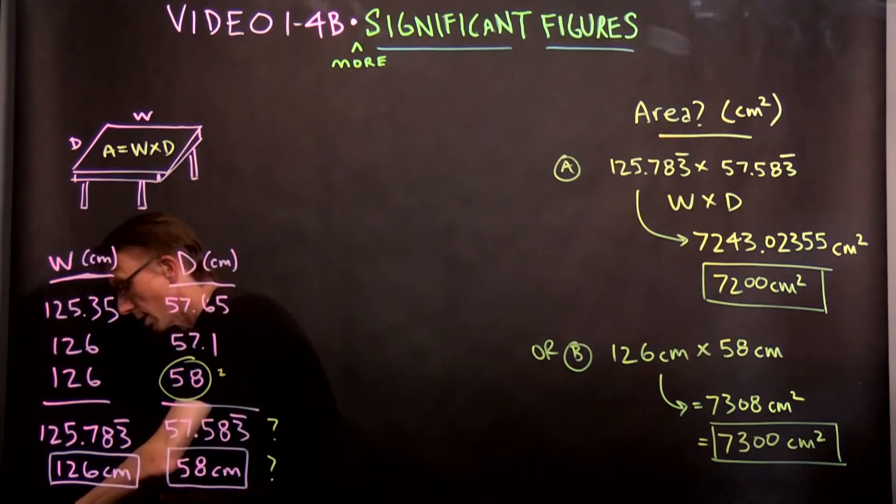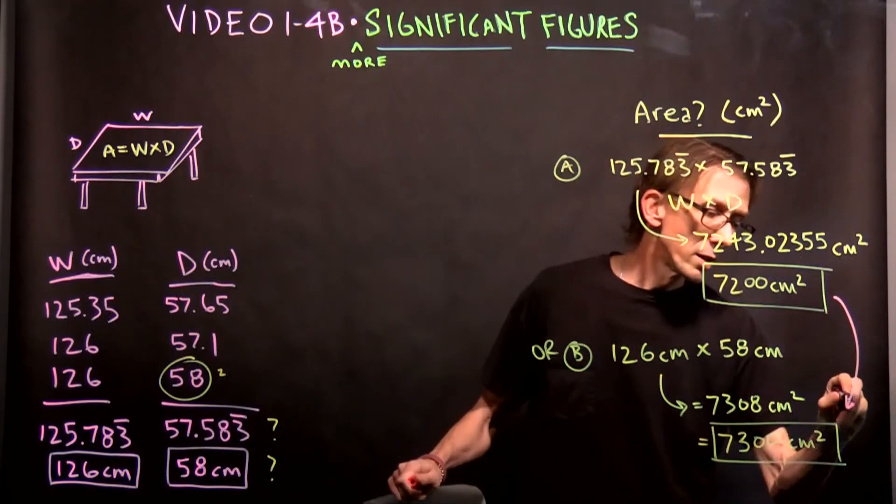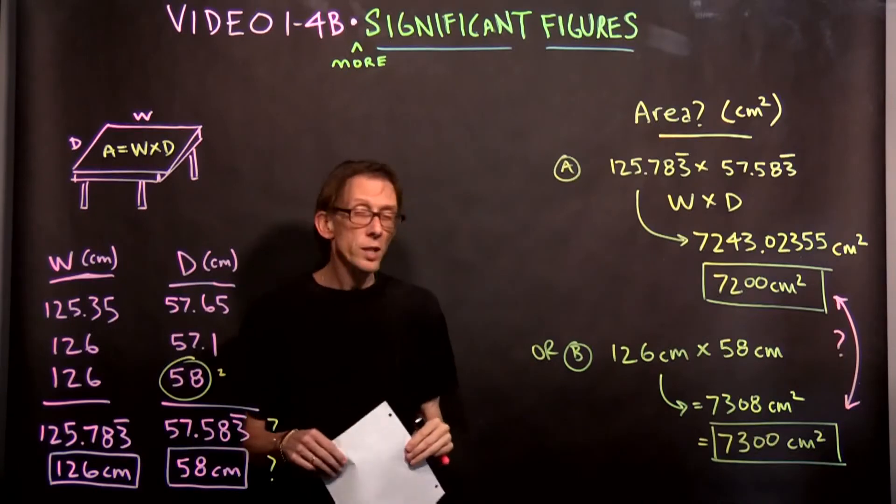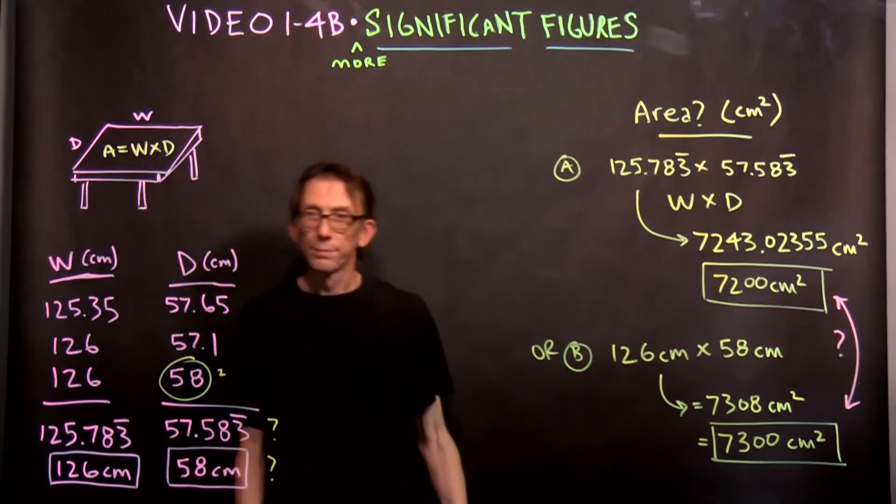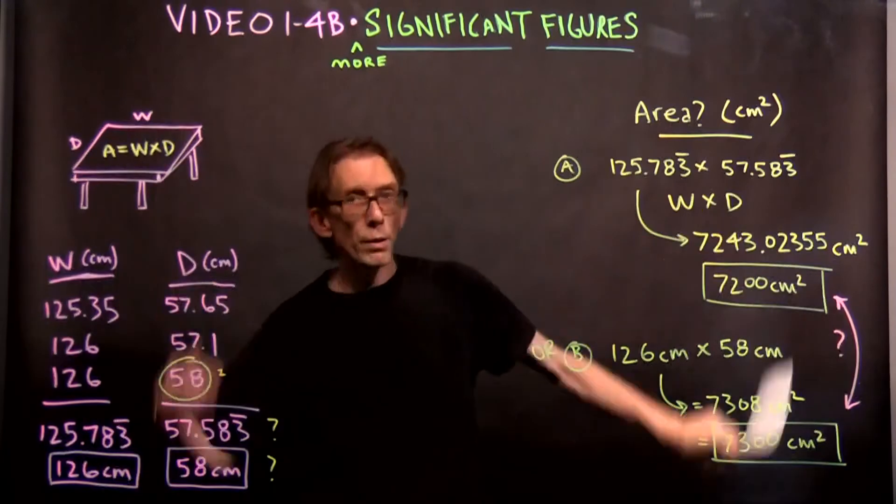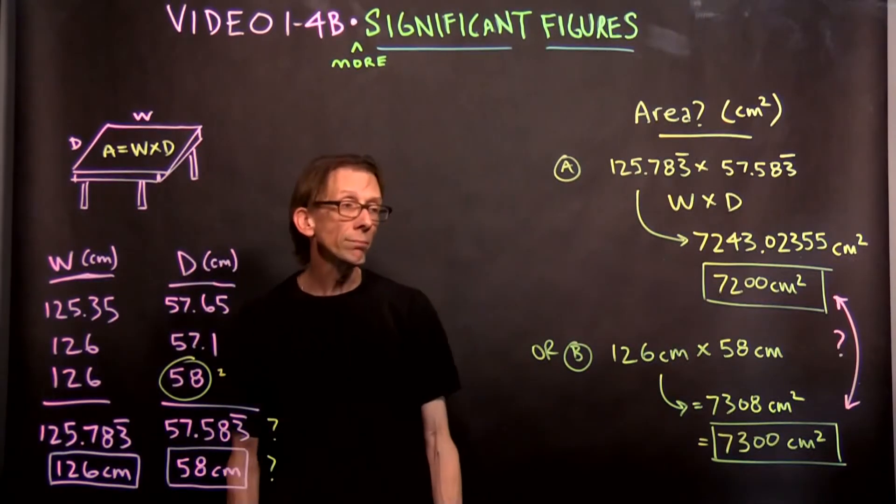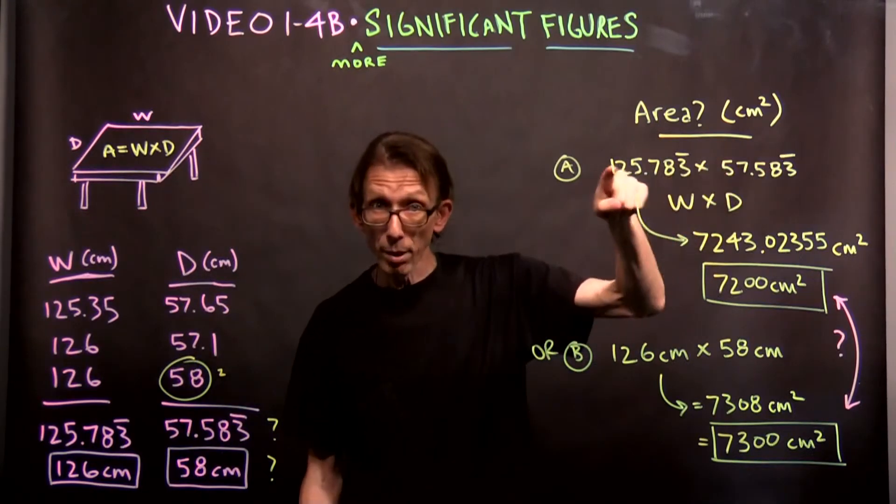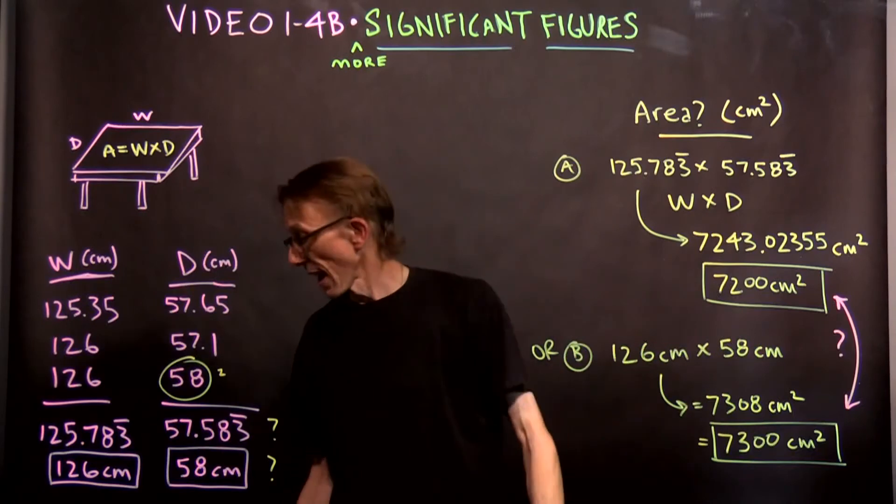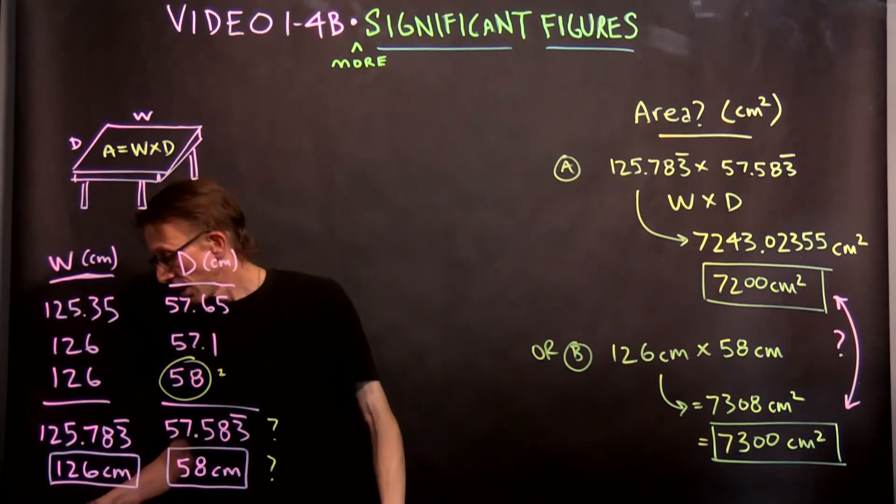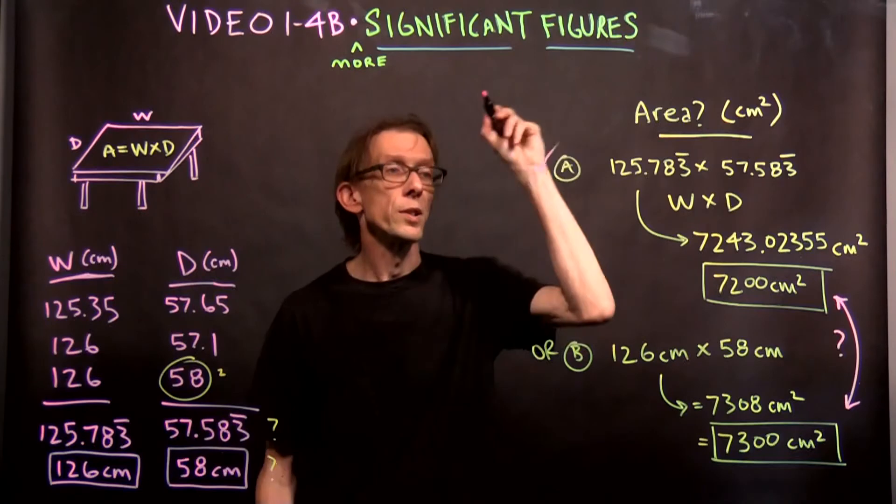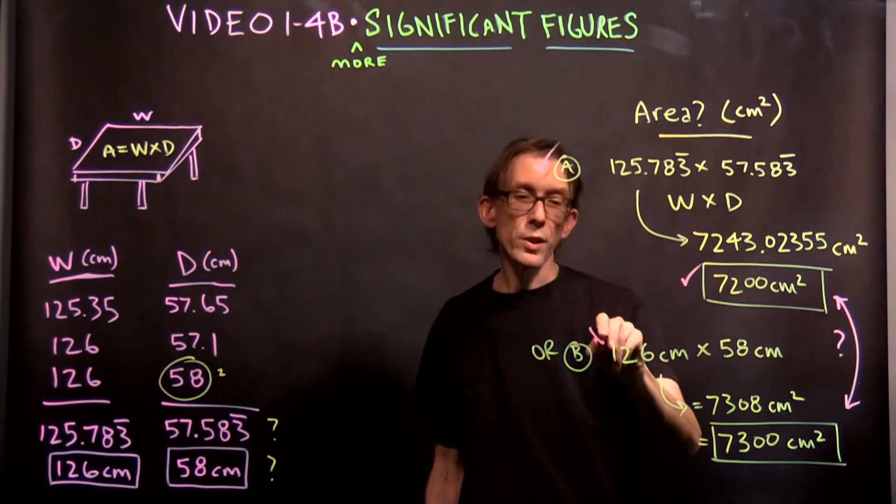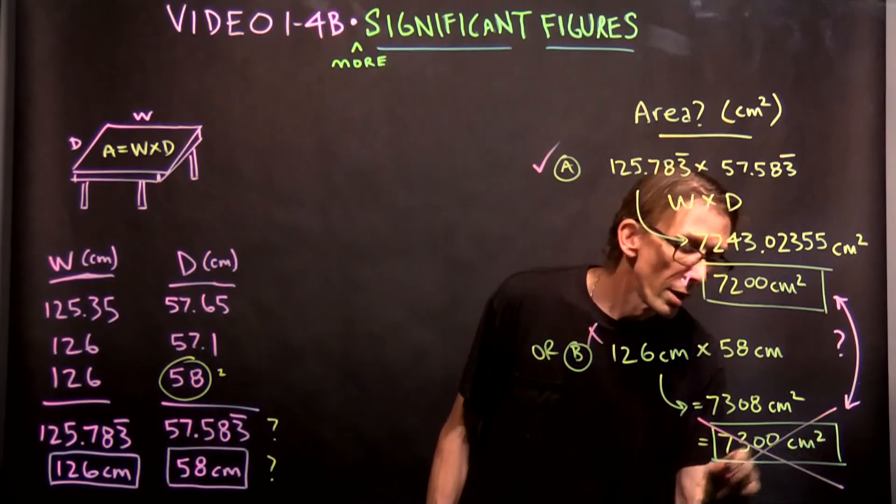So when we use the second set of numbers, these two and multiply them together, we get a different number. So the question is, which one is right? They can't both be right, right? This is physics. They can't both be right, one of them has got to be right. Which one is it? Is it the one where we use the unrounded numbers or the one where we use the rounded numbers? The answer is this one is correct. 7,200 is the right answer. This method is wrong. 7,300 is not the right answer.